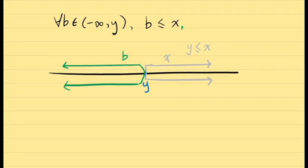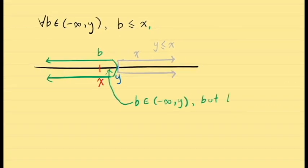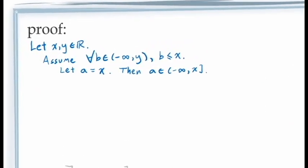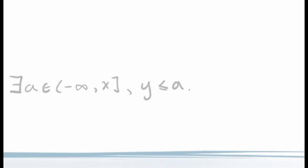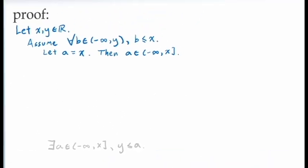One way to think about this: imagine what would happen if x were not greater than or equal to y — in other words, if x < y. Then we could choose a value of b midway between x and y; that value would belong to the open interval from negative infinity to y, yet it would be to the right of x, contradicting our assumption that b ≤ x. This suggests an argument by contradiction. Returning to our proof, we assign a = x, which is in the closed interval from negative infinity to x since the interval is closed. We now need to show y ≤ a, i.e., y ≤ x. We'll do this by contradiction: suppose instead that x < y.